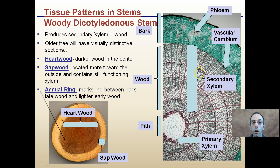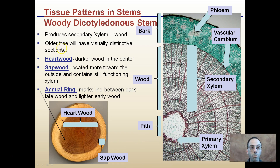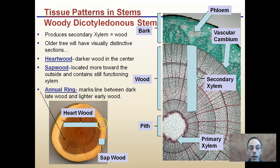Woody dicotyledon stems — these are dicots that produce wood. Heartwood and sapwood are two examples. They produce secondary xylem, which is wood. Older trees have visually distinctive sections: the heartwood is the darker wood in the center, and the sapwood is located towards the outside and contains still-functioning xylem. The annual ring marks are lines between dark late wood and lighter early wood. We can use these rings to determine a little bit of history about what the tree experienced.